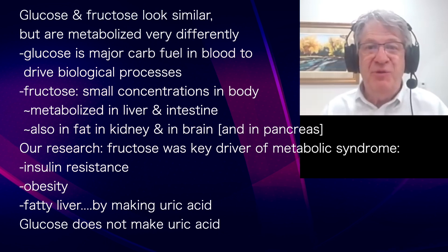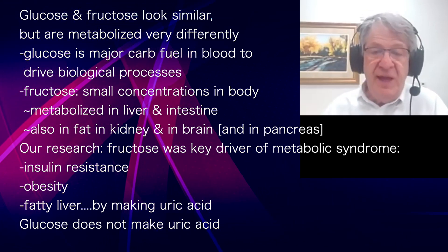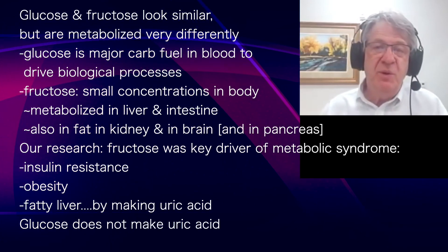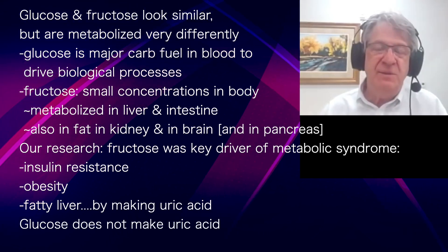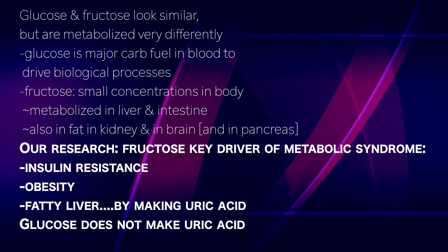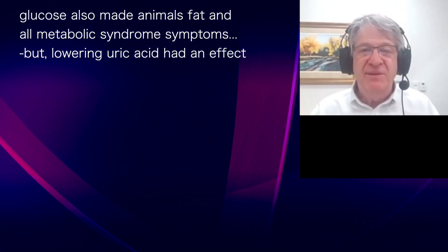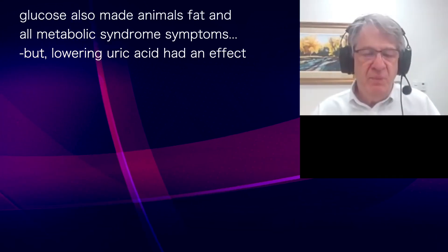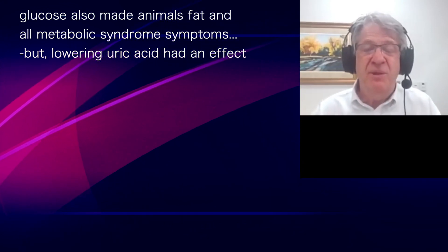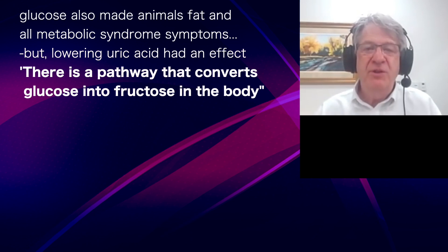We found that fructose was really the key sugar driving obesity and metabolic syndrome. When we fed animals fructose, they got very fat, developed insulin resistance, fatty liver, and high blood pressure. Fructose was what was making the uric acid — glucose doesn't make uric acid. But we also found that when we gave glucose to animals they also became fat, and when we lowered uric acid in animals fed sugar we could have an effect, suggesting there was something going on with glucose as well. We realized there is a pathway by which glucose can be converted to fructose in the body.